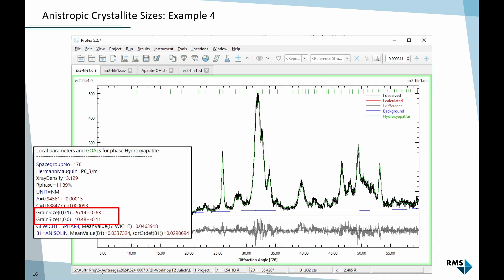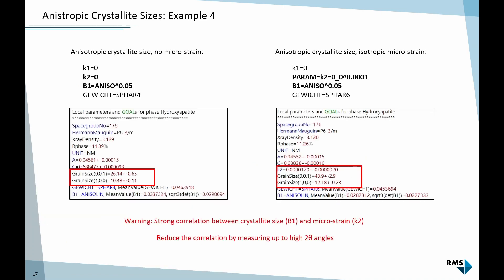That's the difference. If we refine crystallite size isotropically, we get one size in all directions, we assume a spherical crystal. With anisotropic refinement, we assume some kind of needle or platelet. It will determine itself what fits best.